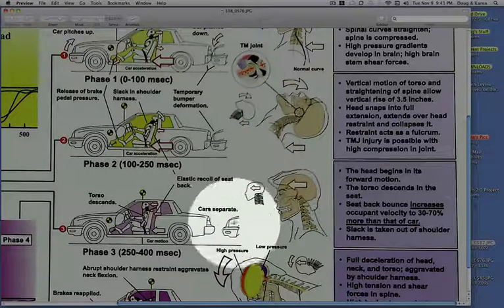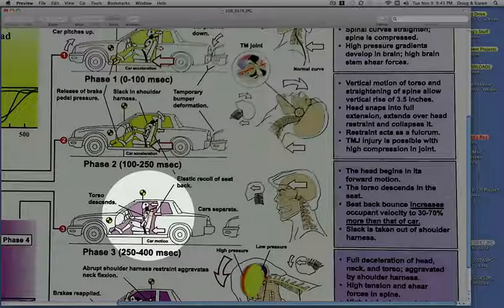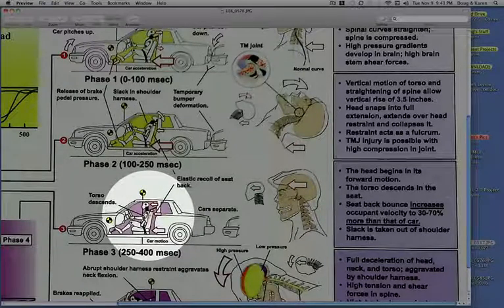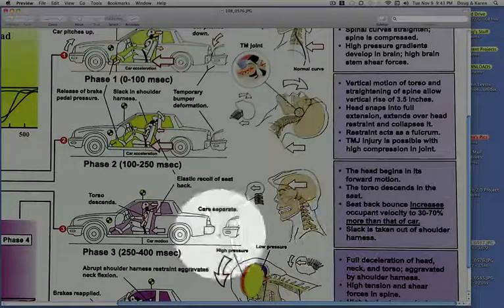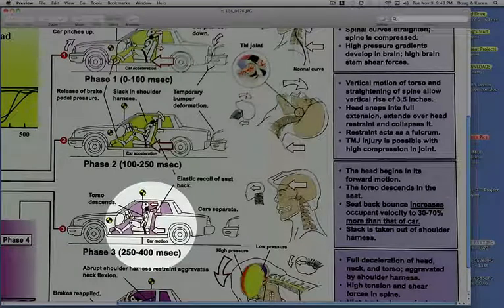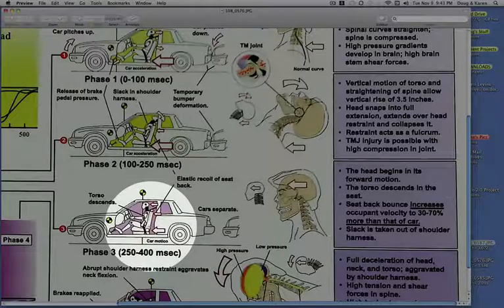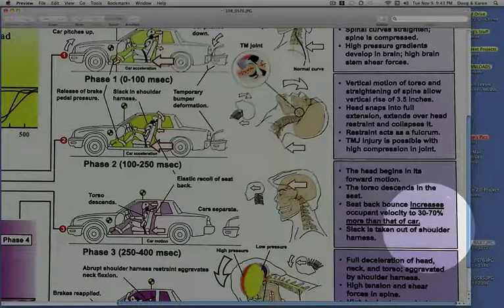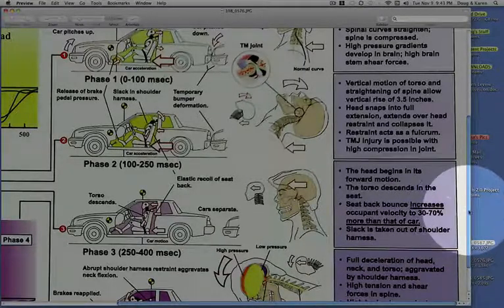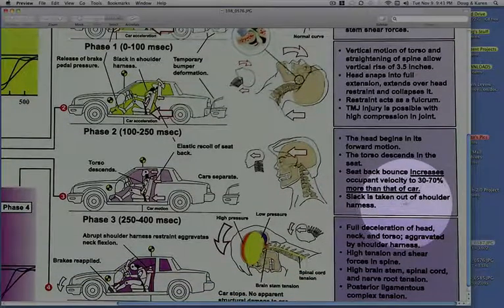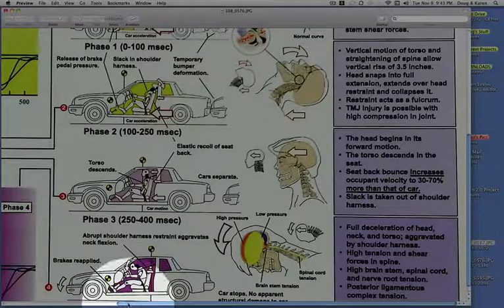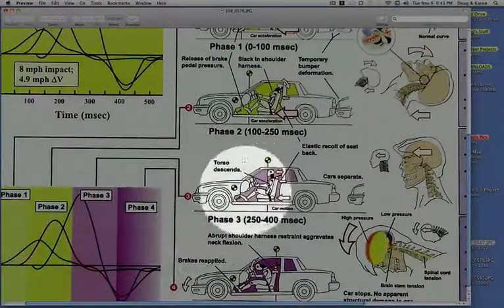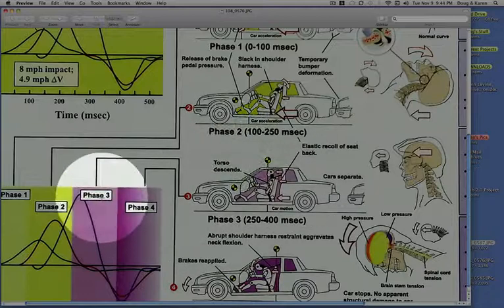This is where finally the head begins to snap forward. The torso goes back down into the seat. The seat back bounce will usually increase the velocity to 30 to 70 percent more than that of the car. You first got slammed by the seat, the seat acts like a spring in a way and throws the body forward anywhere from 30 to 70 percent faster than the car itself. Slack is usually taken out of the shoulder harness at this point in time.